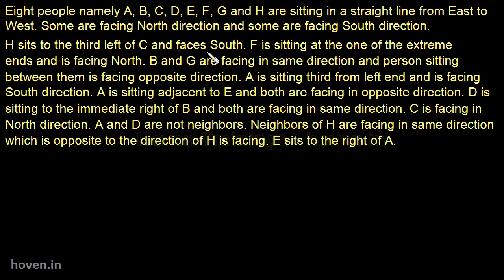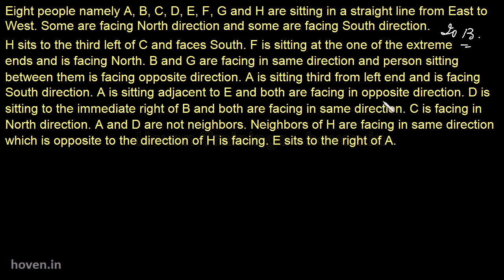8 persons A, B, C, D, E, F, G and H are sitting in a straight line from east to west. Some are facing north direction and some are facing south direction. Certain values are given and we have to determine the seating arrangement. This question was asked in the 2013 PO examination and these types of questions are being repeatedly asked. So let us try to solve this question and understand how we can solve such questions.